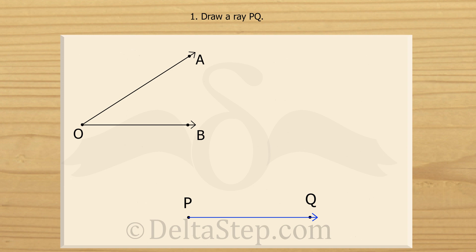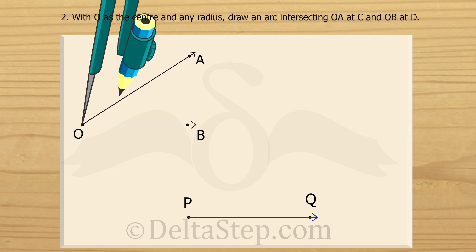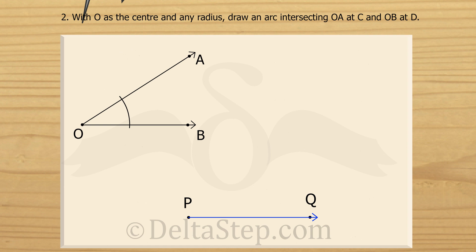We try to make it as horizontal as possible but it is not mandatory to make it horizontal. Then with point O as the centre and any convenient radius — neither too big nor too small — we draw an arc to meet the ray OA at C and the ray OB at D. Just make sure the arc intersects both arms of angle AOB.